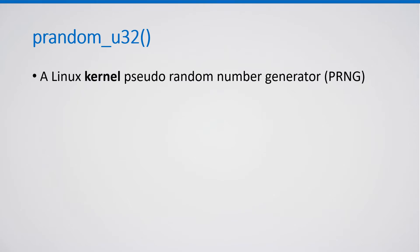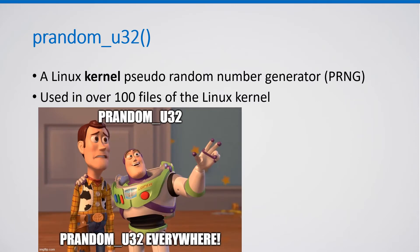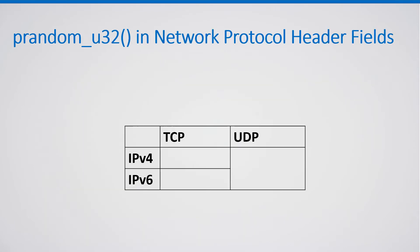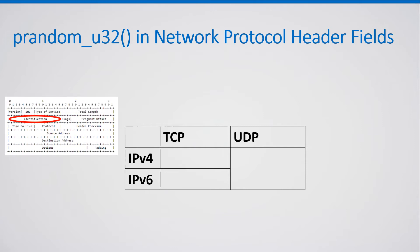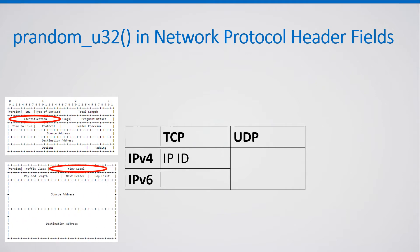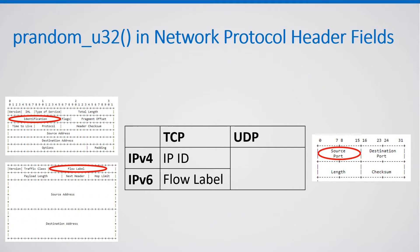pRandomU32 is a Linux kernel pseudorandom number generator which is used in over 100 files of the Linux kernel. We focus on the use of pRandomU32 to populate network protocol header fields, such as the TCP-IPv4 IPID field, the TCP-IPv6 flow label field, and the UDP source port field, which is used in both IPv4 and IPv6.